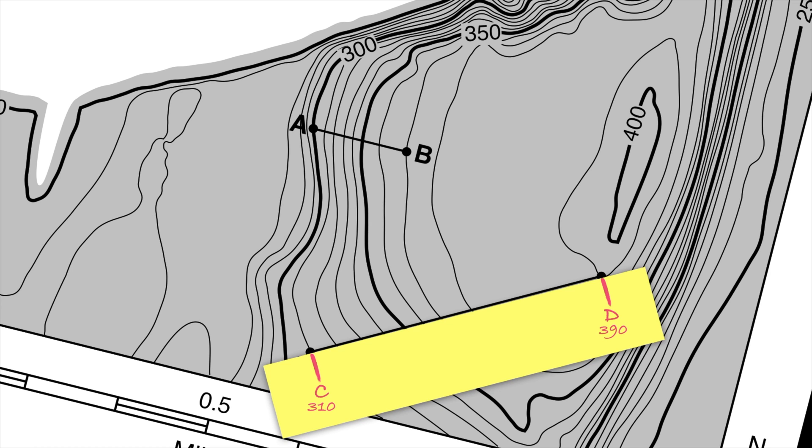So for example, I see a contour line crossing here and that would be an elevation of 320. Here's 330, 340, 350, 360, 370, and 380.